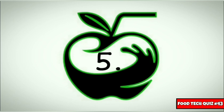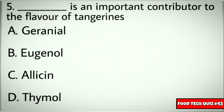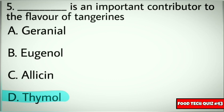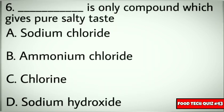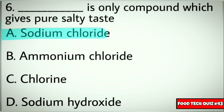Question number 5: Dash is an important contributor to the flavor of tamarind rings. Options: A) Geraniol, B) Eugenol, C) Allicin, D) Thymol. Correct answer: D) Thymol. Question number 6: Dash is the only compound which gives pure salty taste. Options: A) Sodium chloride, B) Ammonium chloride, C) Chlorine, D) Sodium hydroxide. Correct answer: A) Sodium chloride.